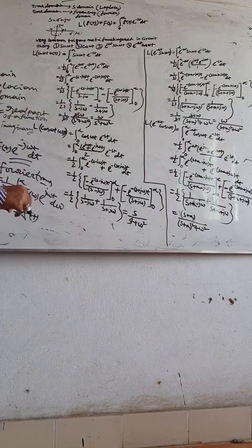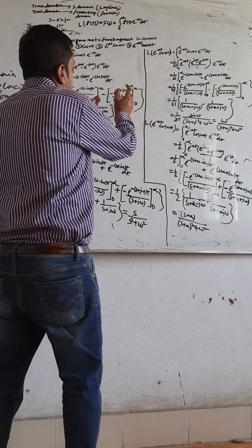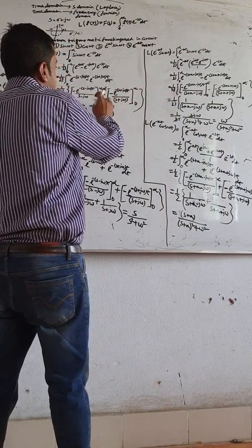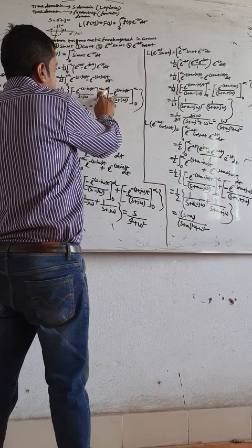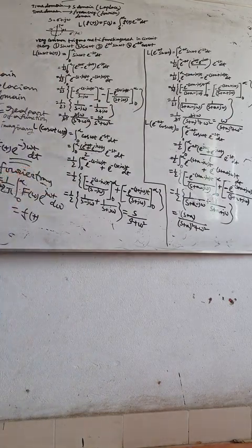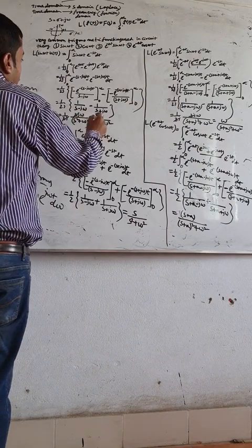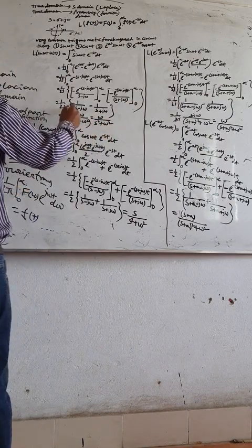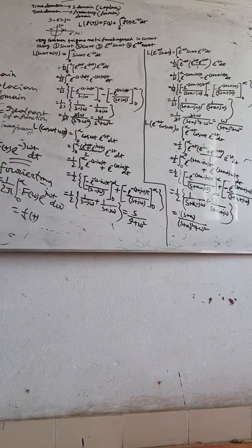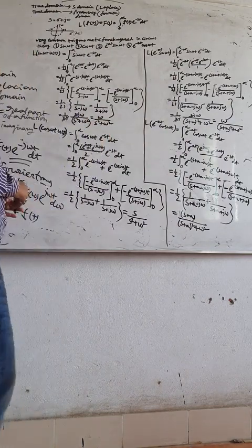Evaluating the limits: the upper limit gives 0, and substituting the lower limit gives 0 minus (minus 1 by s plus j omega), so minus minus becomes plus, giving 1 by (s plus j omega). Performing the calculation — using the (a minus b)(a plus b) equals a squared minus b squared formula — the final result is omega divided by s squared plus omega squared.